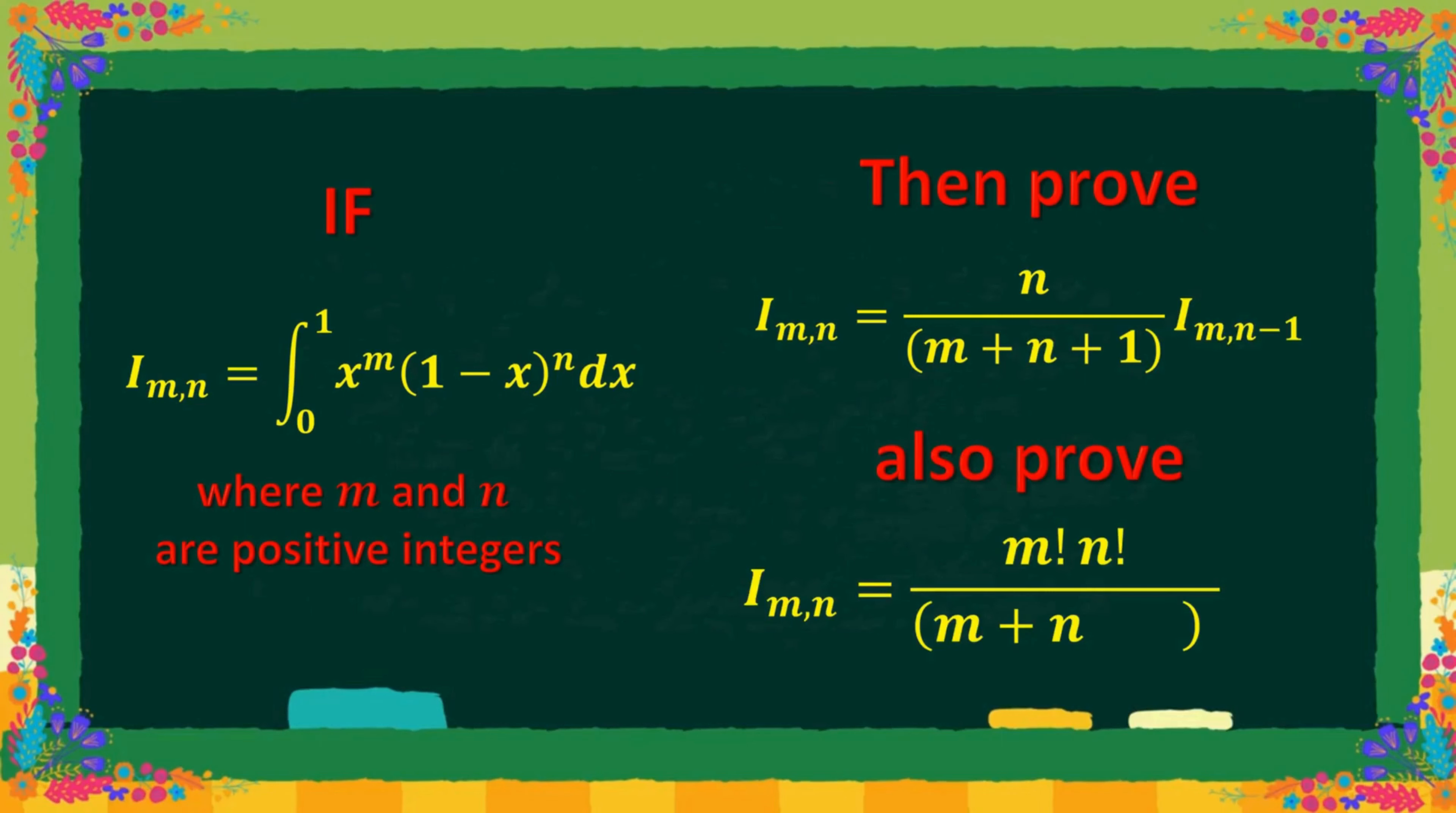Here is the problem: to find the reduction formula of integration from 0 to 1 of x to the power m times 1 minus x to the power n dx.